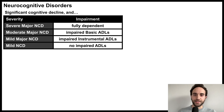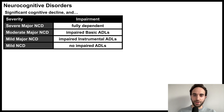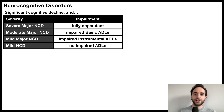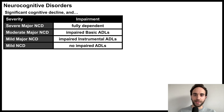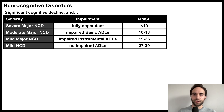Mild NCD involves no impairment in ADLs. Mild major NCD involves impaired instrumental ADLs. Moderate major NCD involves impaired basic ADLs. Patients with severe major NCD are fully dependent on others, often requiring 24-7 nursing care. Severity can also be approximated based on the patient's mini-mental status exam score, as shown here.